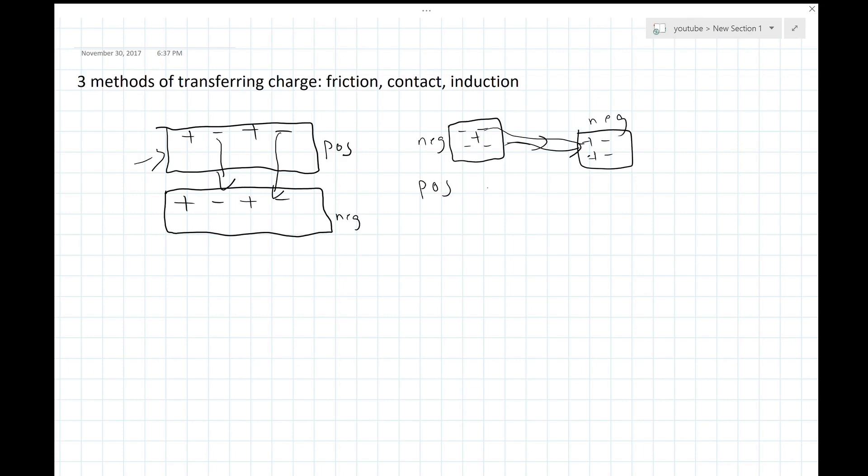If the object is positive, then what will happen - so if this is a positive object, it has more protons, and then this is neutral. Since protons can't be transferred, this object will actually transfer electrons and both objects will become positive. This only works if the charged object is a conductor because it needs to have the ability to transfer electrons.